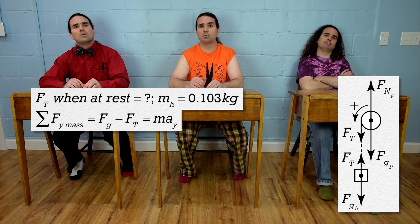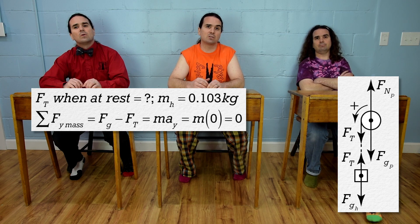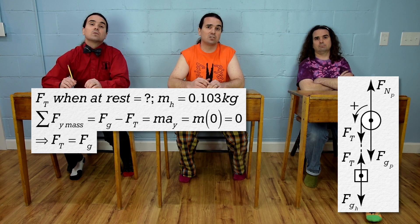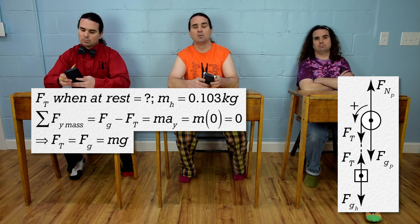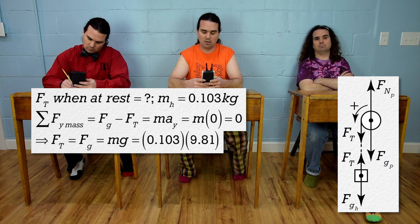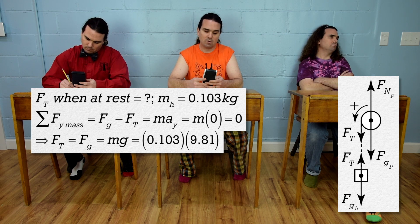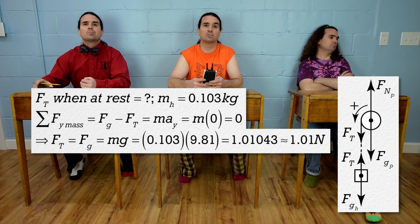This is before you let go of the pulley, so the system is at rest and the acceleration in the y-direction equals 0. Therefore, the force of tension equals the force of gravity, which equals the hanging mass times acceleration due to gravity, or 0.103 times 9.81, which equals 1.01043, or 1.01 newtons.